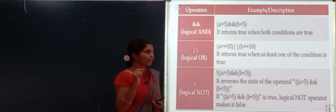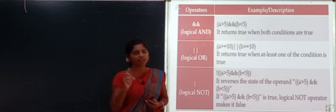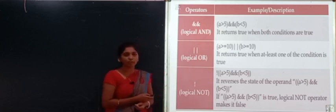For logical OR: a >= 10 OR b >= 10. Suppose a = 11: 11 is greater than or equal to 10 — true. At least one condition being true makes the OR result true. Logical NOT represents the negation of a value. This is how logical operators work.